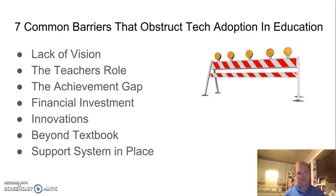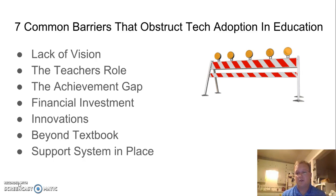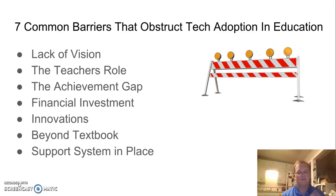The achievement gap: not everybody is going to have access to the same thing, and we have to prepare ourselves for that. That's going to be a huge problem we face. It could be a socio-economic issue or a geographical issue. The problem of the achievement gap is also measurable when we get into those things.